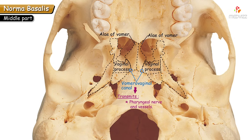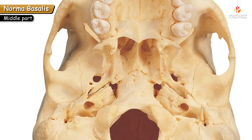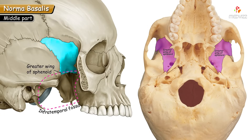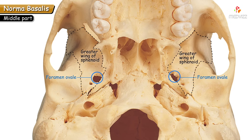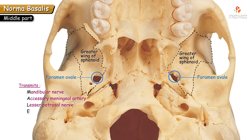On the lateral surface, the greater wing of the sphenoid forms the roof of the infratemporal fossa, well appreciated in norma lateralis. Over the sphenoid there are two important foramina. The first is the foramen ovale, prominently seen and oval in shape. To remember structures passing through it, use the mnemonic MALE: M for mandibular nerve, A for accessory meningeal artery, L for lesser petrosal nerve, and E for emissary vein.